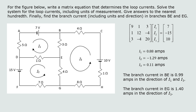So we've done all three parts: written the matrix equation, solved the system for the loop currents to the nearest hundredth, and found the branch currents in BE and EG. The part you will enter in the lab case study is the initial matrix setup. Remember: voltage is positive if the current exits the long end of the battery, and negative if it exits the short end. When current flow opposes the loop direction, it's a negative resistance — that's why we ended up with some negatives in our resistance matrix.